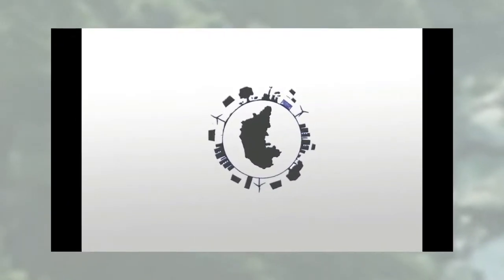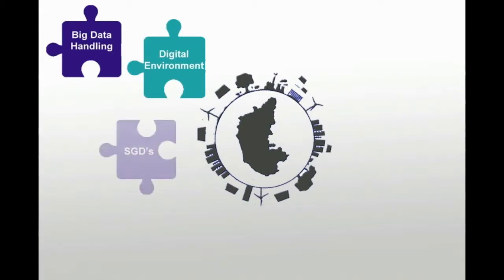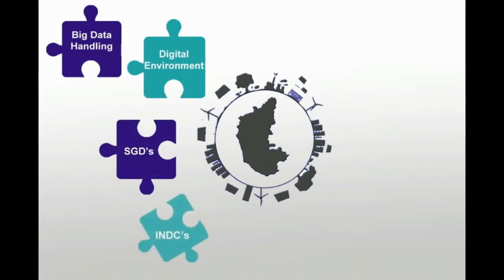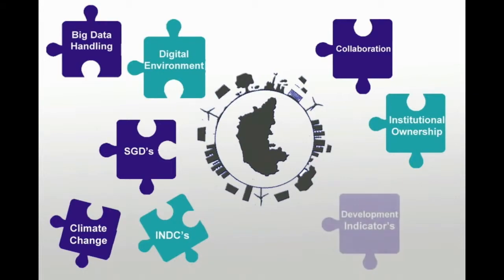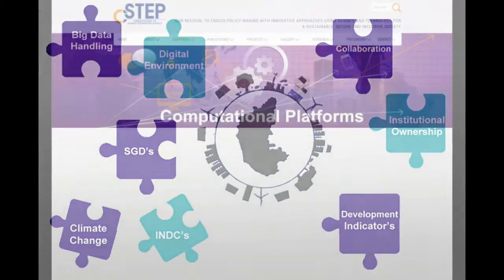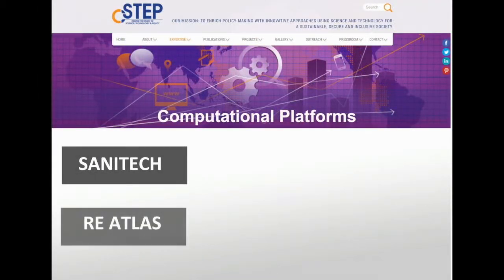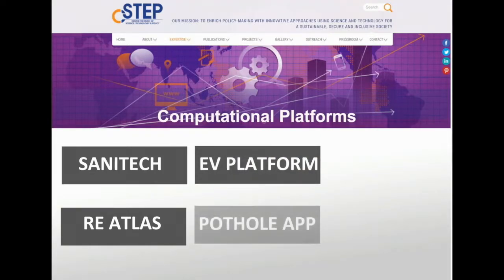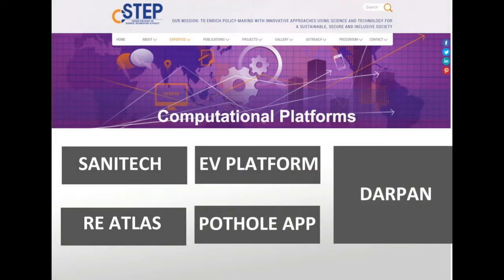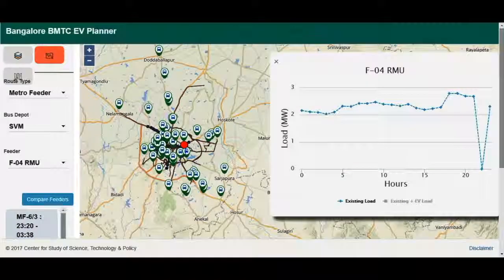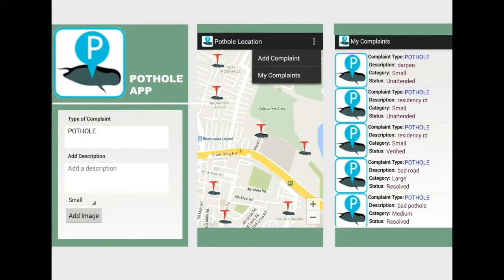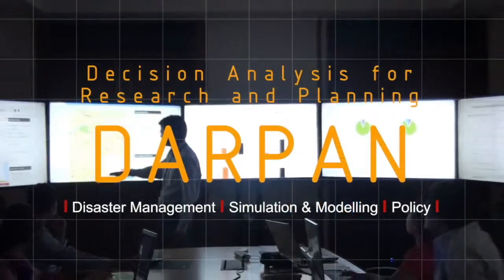There remain challenges in building such a platform. We need to crack many bottlenecks by learning from past failures in handling big data, creating the right kind of digital environment, building institutional ownership in a collaborative effort, and choosing priority development indicators. Being a leading science and technology think tank, C-STEP has expertise in both urban planning and designing computational platforms to aid decision making. A number of such platforms have been developed using the unique capabilities of C-STEP's User Interactive Computer Application Decision Analysis for Research and Planning, or DARPA.